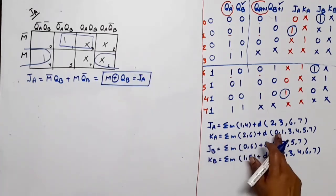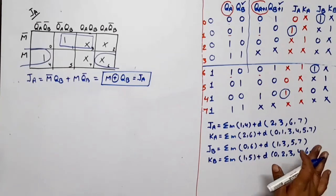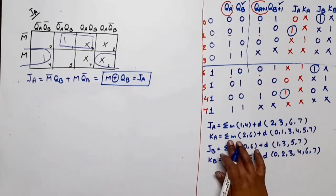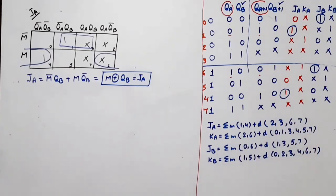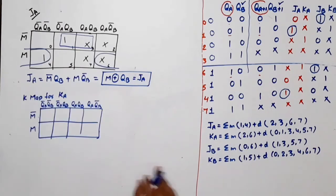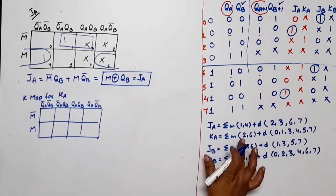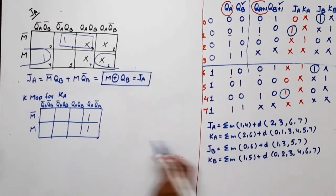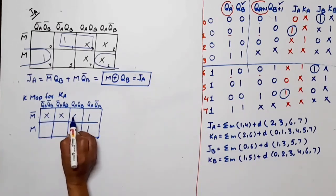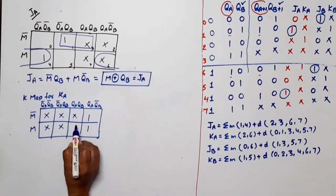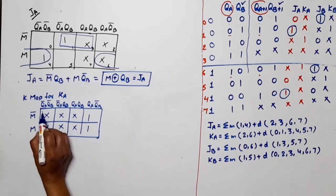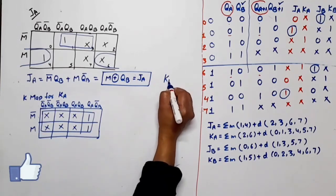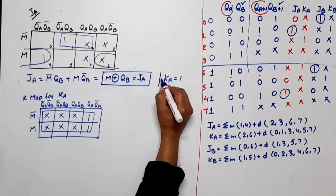For KA, either you can draw the K-map, or you can directly write 1, because there is no zero — all cells are covered. The mean terms are 2 and 6, don't cares are 0, 1, 3, 4, 5, 7. So KA is equal to 1.